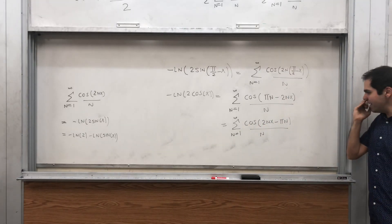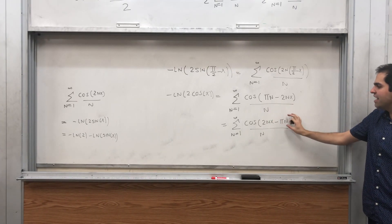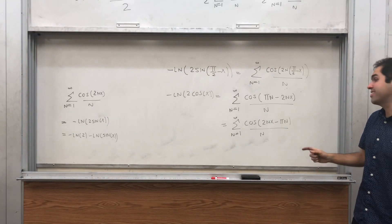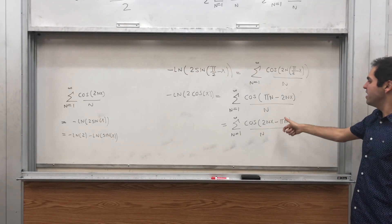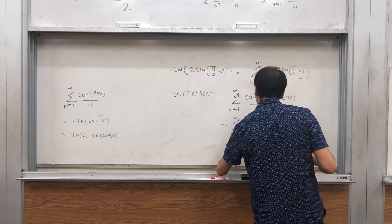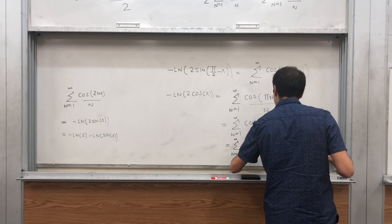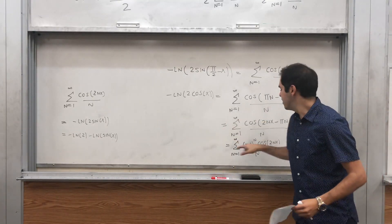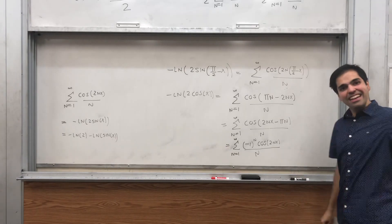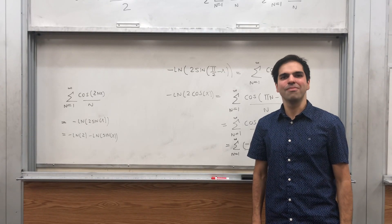Since sin(π/2 - x) = cos x, the left side is -ln(2cos x). The argument of cosine becomes πn - 2nx. Since cosine is even, this is cos(2nx - πn). If n is even, cos(2nx - 2π·(n/2)) stays the same. If n is odd, cos(2nx - π) = -cos(2nx). So it alternates, giving us a factor of (-1)^n, and we get the sum from n = 1 to infinity of (-1)^n cos(2nx) / n, and with the extra minus sign out front, the (-1)^(n+1) that some people see. Thanks for following along — if you like this and want to see more math, please subscribe.